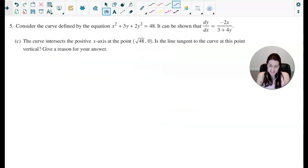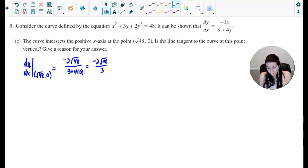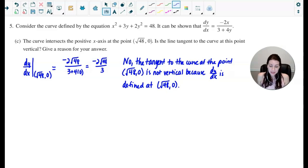Now on to part C. The curve intersects the positive x-axis at the point root 48, 0. Now is the line tangent to the curve at this point vertical and give a reason for your answer. So let's go ahead and evaluate the derivative at square root of 48, 0. And so I would get negative 2 root 48 over 3 plus 4 times 0, or negative 2 root 48 over 3. Now we can see here that the slope would be negative, therefore the tangent line would not be vertical. And since the problem says to give a reason for your answer, my reason would be no, the tangent line to the curve at the point square root of 48, 0 is not vertical because dy dx is defined at the point root 48, 0. And for the tangent line to be vertical, you would want the slope to be undefined.